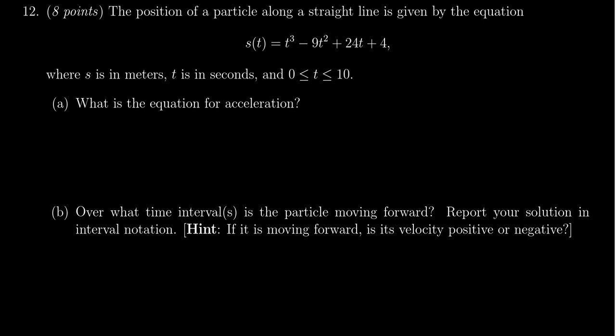We're told that the position of a particle along a straight line is given by the equation S of T is equal to T cubed minus 9T squared plus 24T plus 4, where S is being measured in meters, T is being measured in seconds, and this model is valid from the timestamp 0 seconds up to 10 seconds.